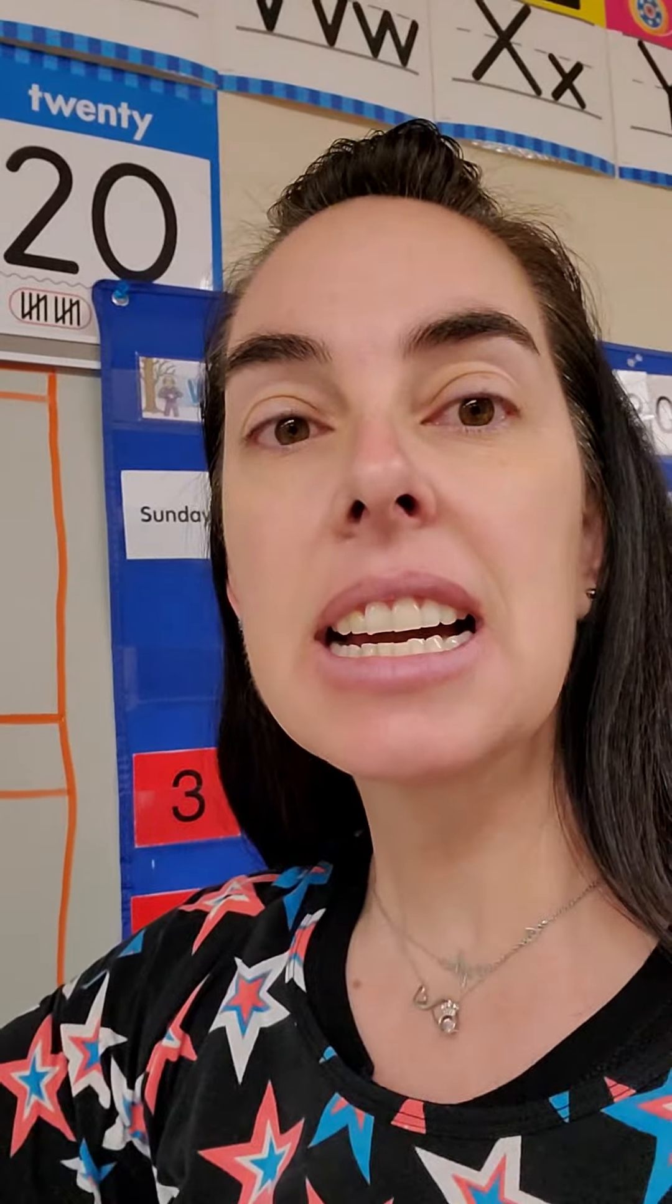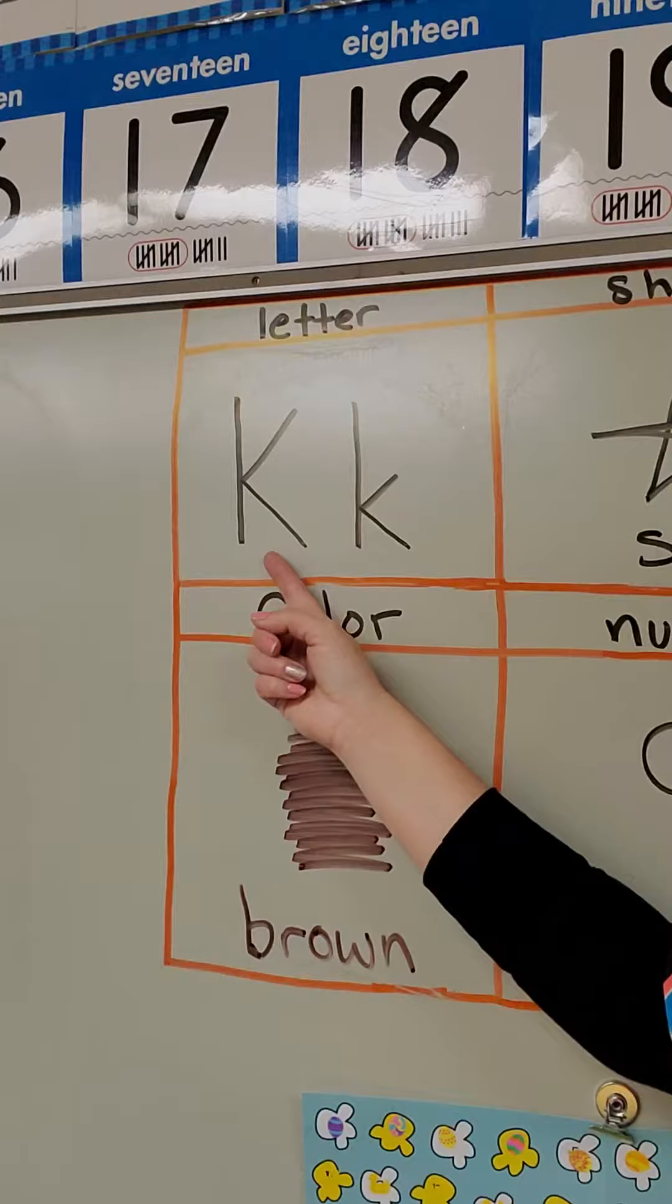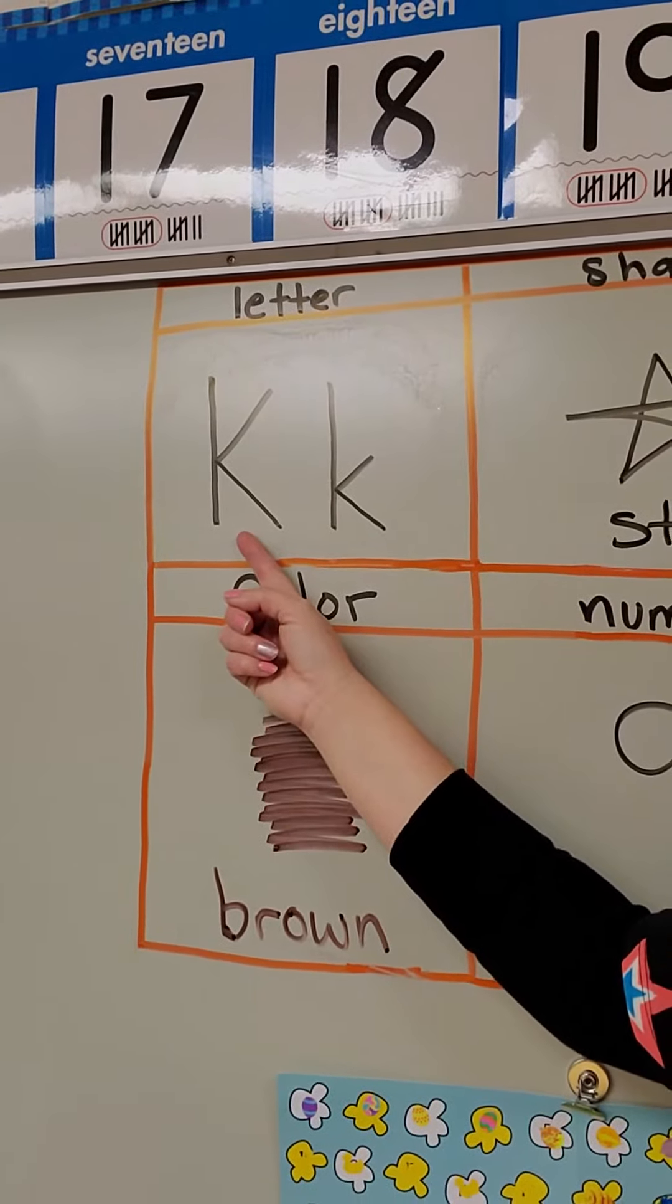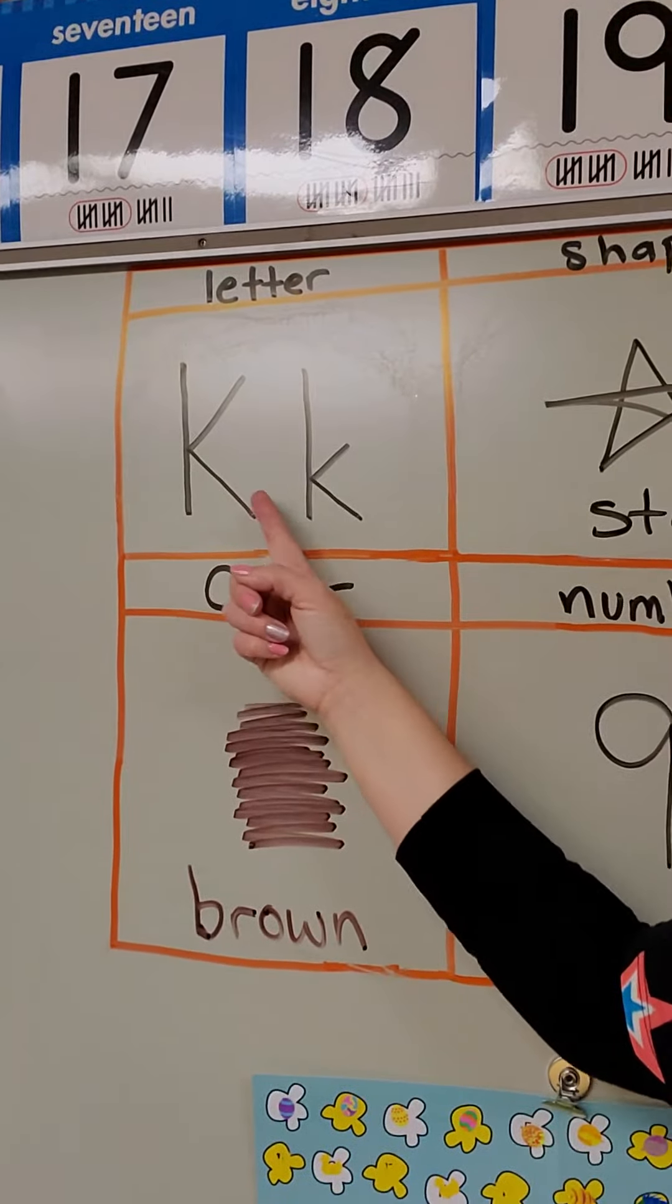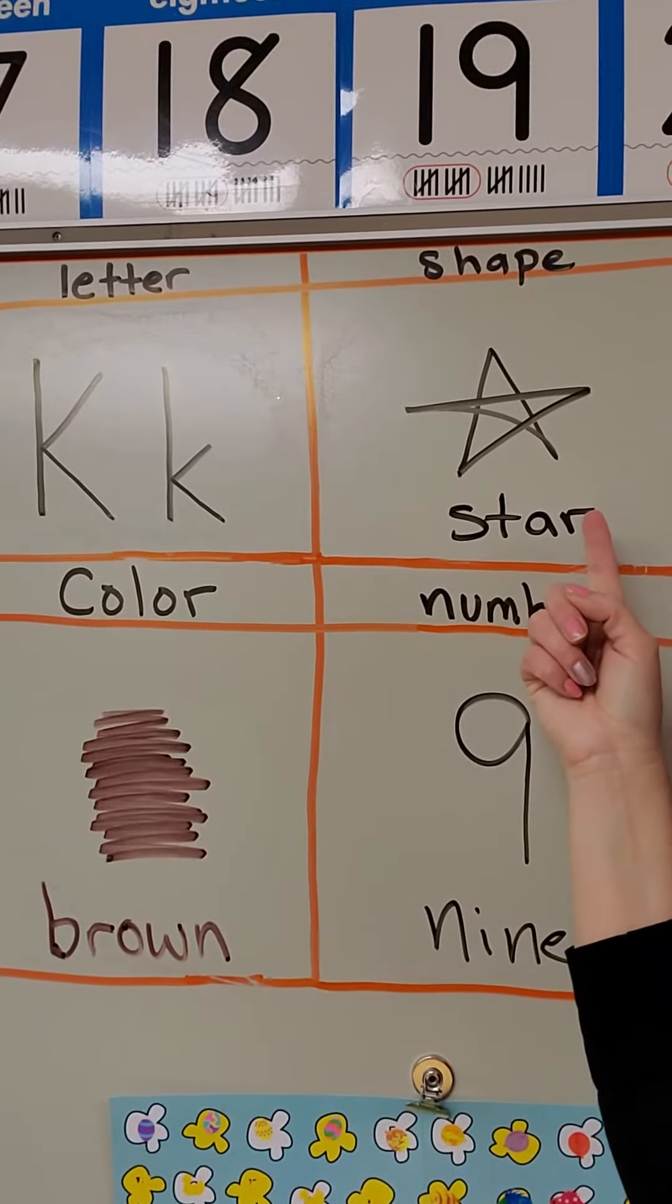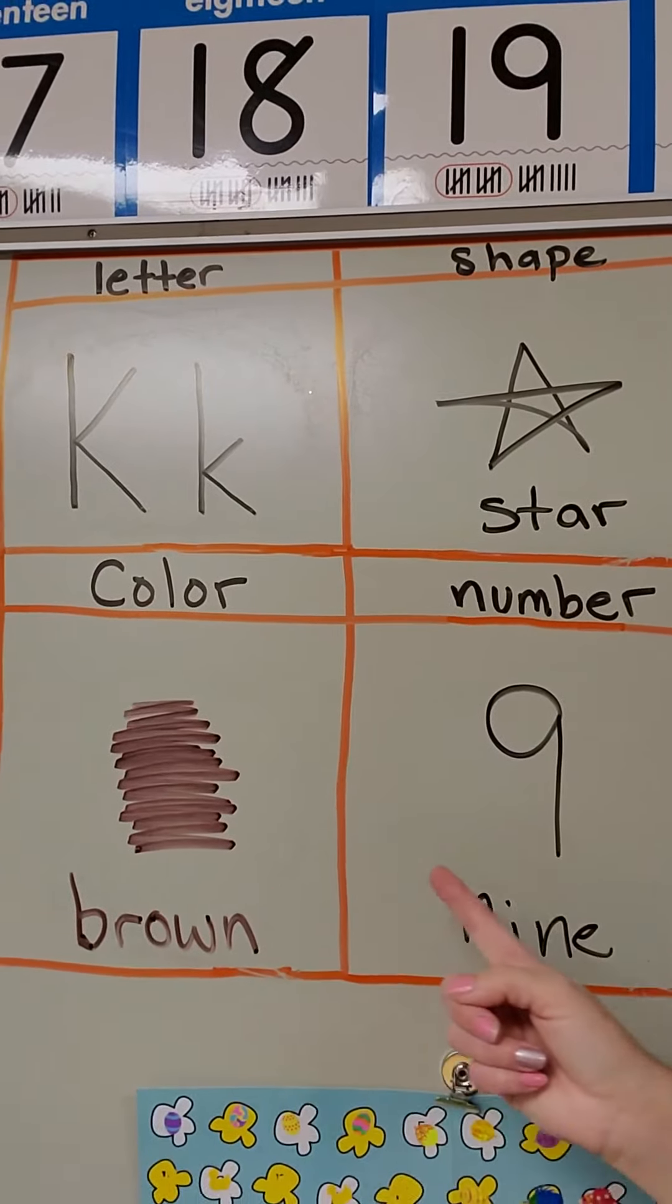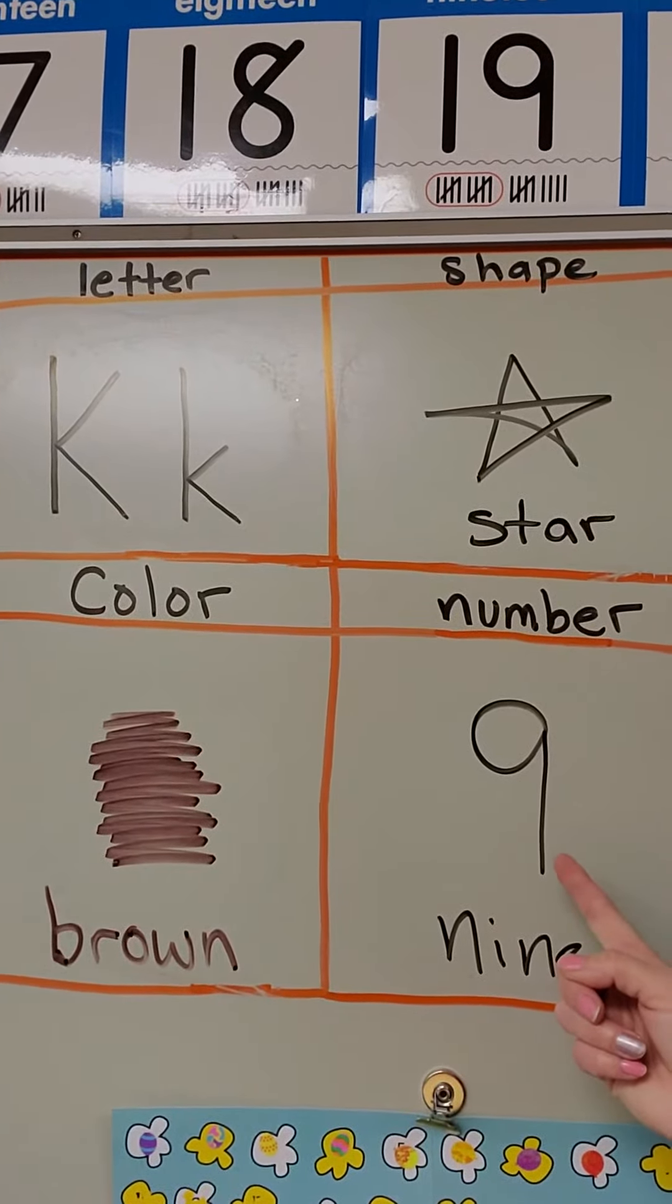Today we are learning about the letter K. K says k, k, k, kick, or key, or kangaroo. So uppercase K, lowercase K. We're also learning about the shape star, the color brown, and the number 9.